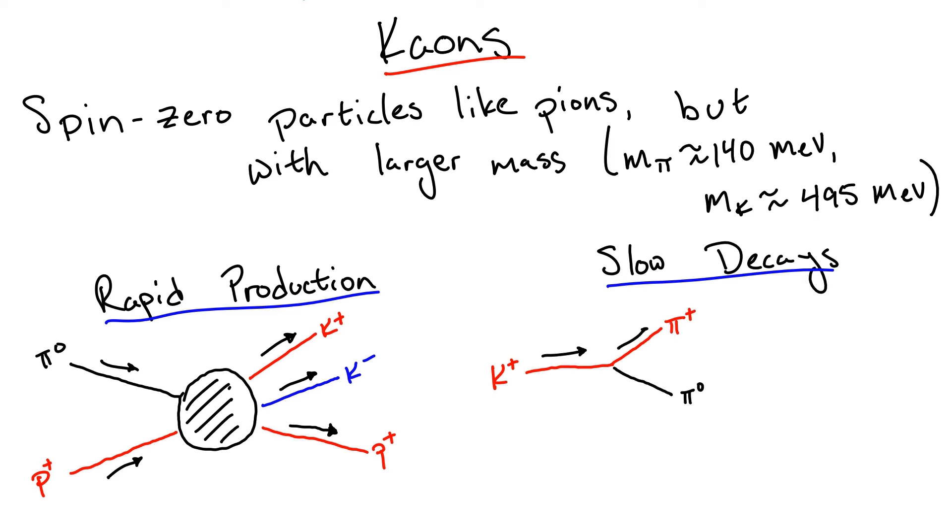With this, one might naively expect kaons to strongly decay into pions with a very short lifetime. However, this did not seem to be the case. While it is possible for kaons to decay into pions, this reaction is very slow, again with a lifetime of about 10 to the minus 8 seconds. And, in fact, the slightly more preferred decay mode is a charged kaon decaying into a muon and muon neutrino, just like the pion. This observation was quite puzzling to physicists at first, but turned out to have an elegant solution.